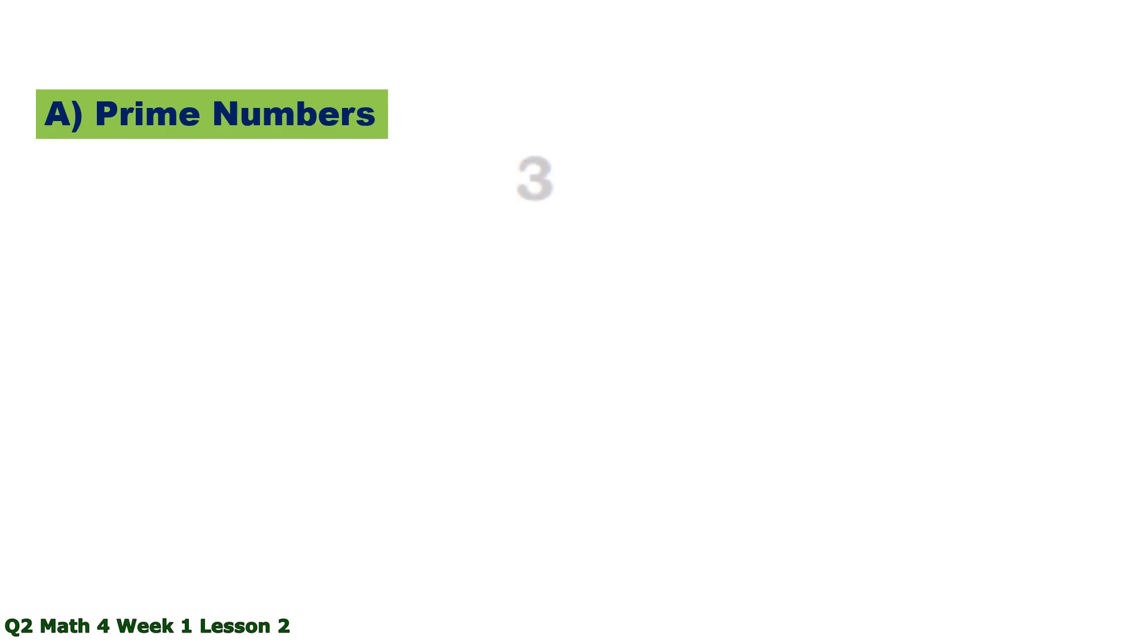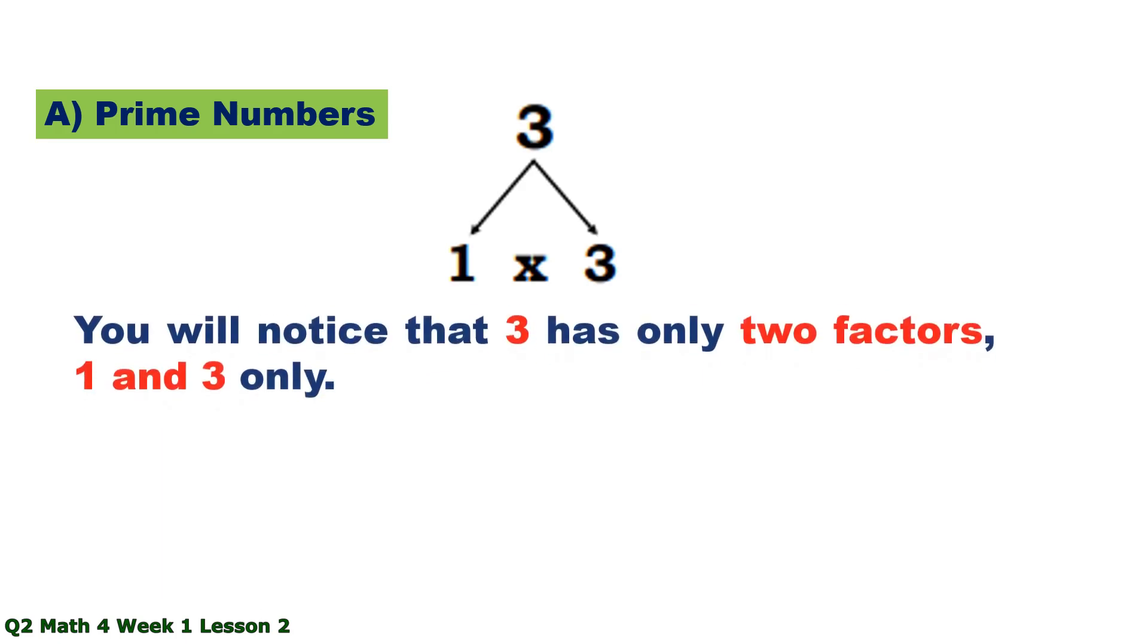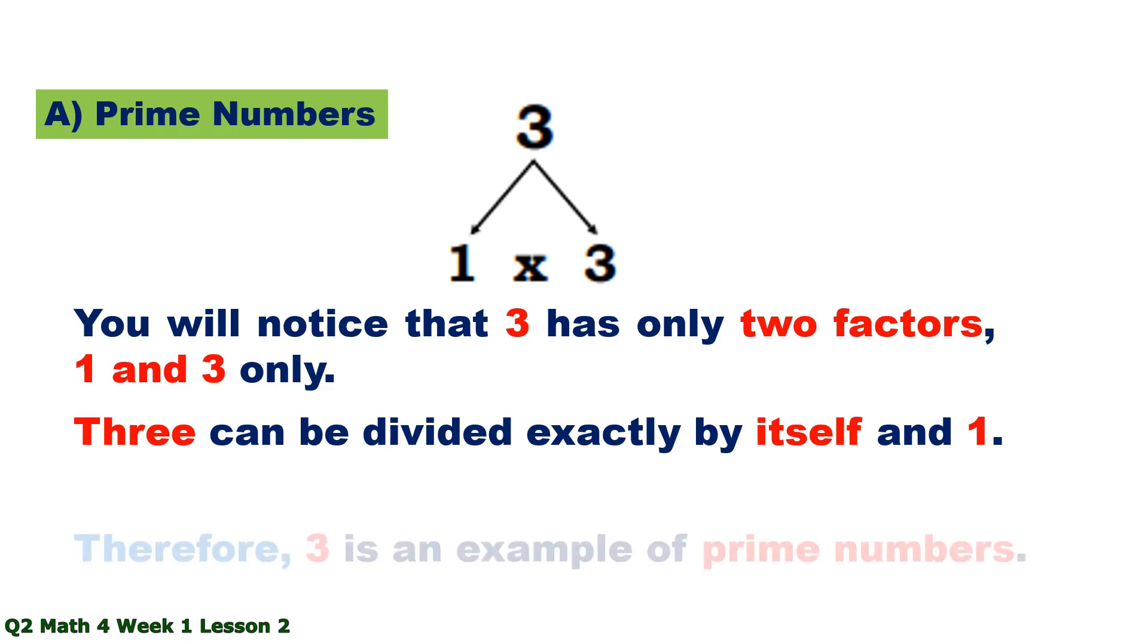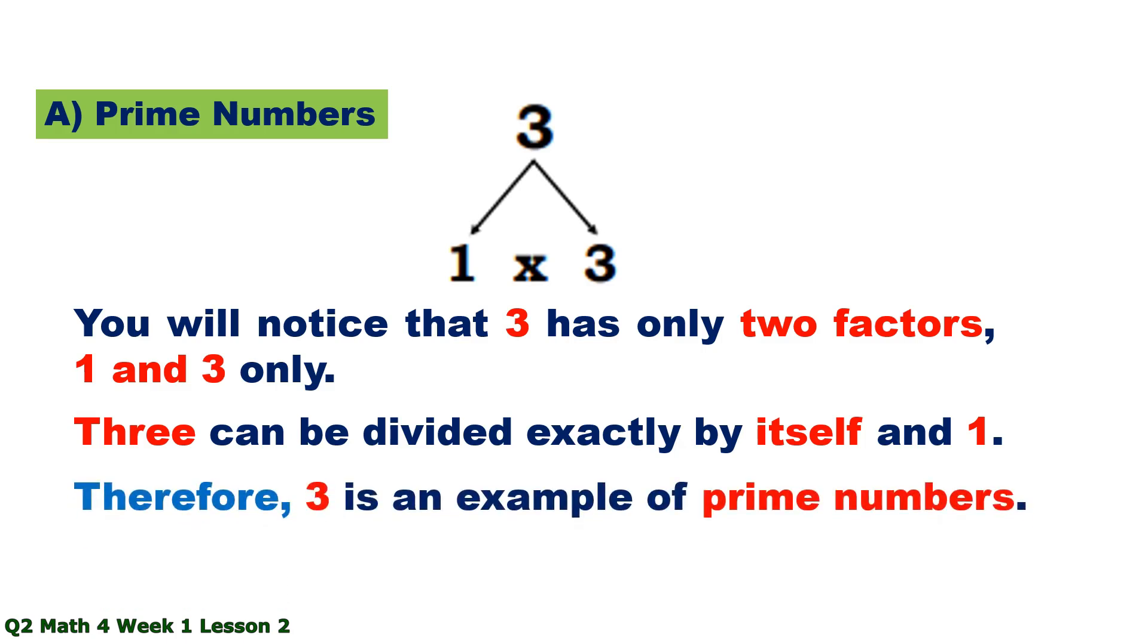Prime numbers. The factors of 3 are 1 times 3. You will notice that 3 has only two factors, 1 and 3 only. 3 can be divided exactly by itself and 1. Therefore, 3 is an example of a prime number.